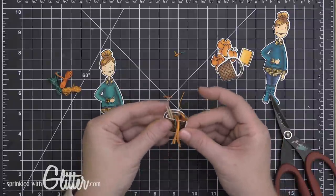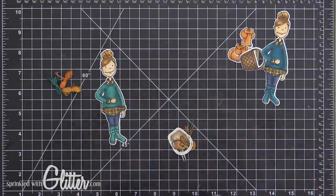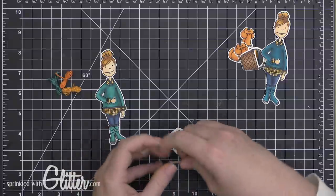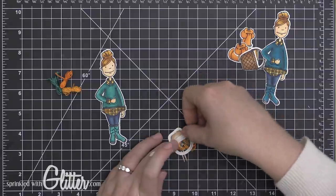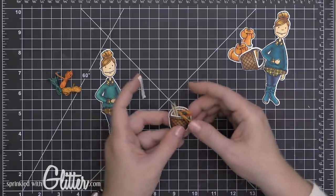When I get that all adhered into the basket, I'm going to take a second piece of that Be Creative or that Scor-Tape and I'm going to put it over the top of all of those things that are on the back. That's just going to help seal it in and I can use that to help adhere it onto my Leading Lady in a little bit as well.